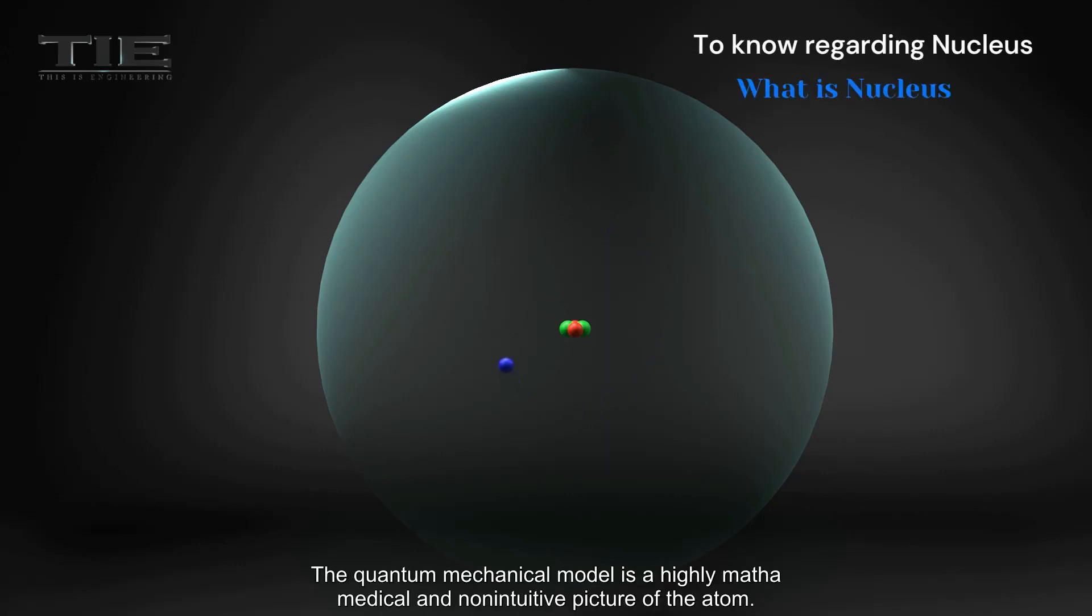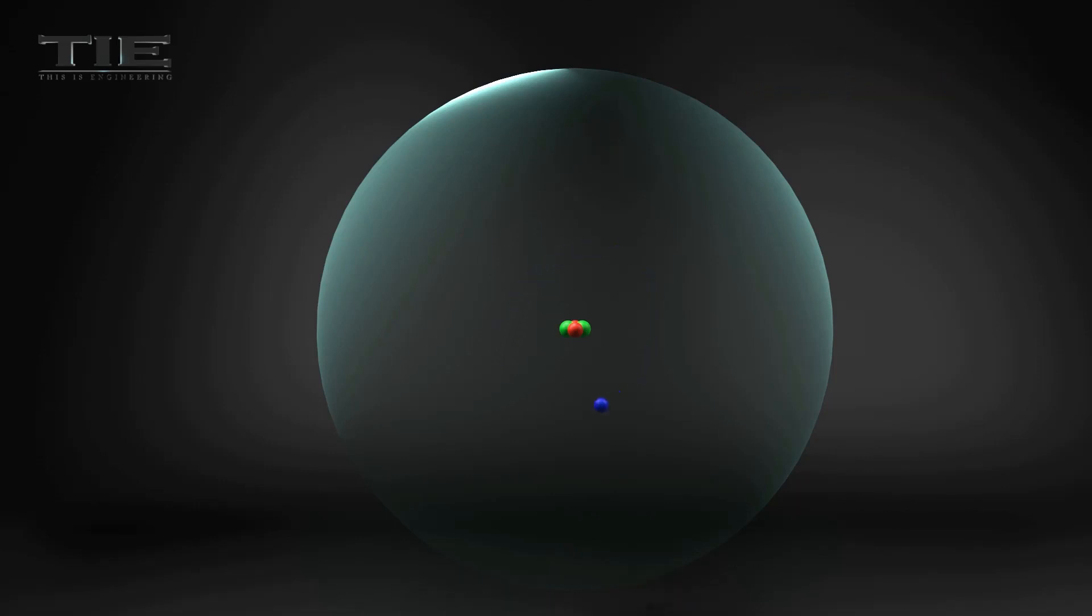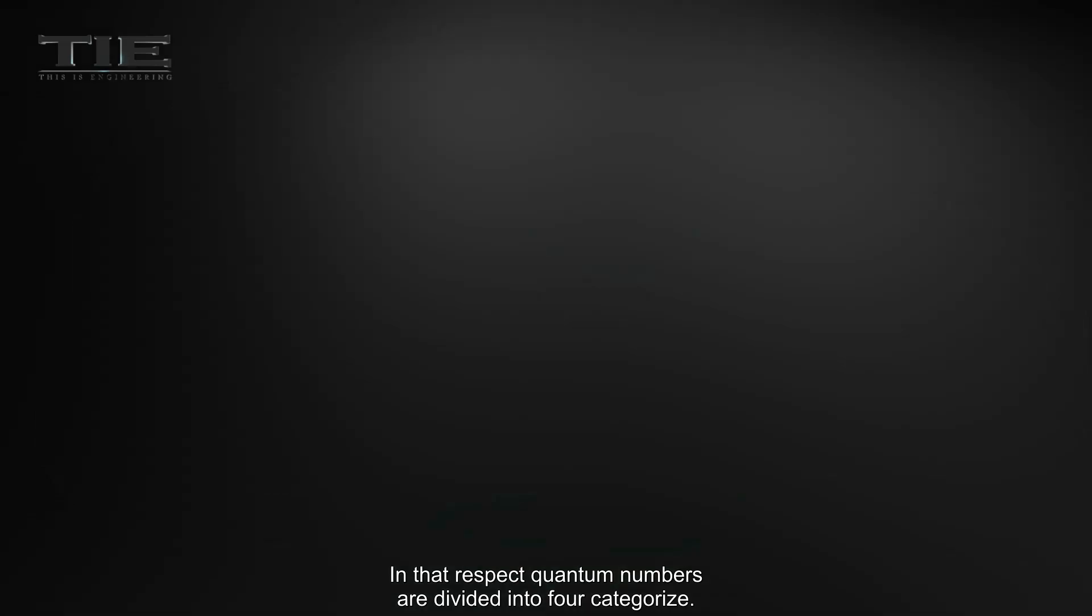The quantum mechanical model is a highly mathematical and non-intuitive picture of the atom. In that respect, quantum numbers are divided into four categories.